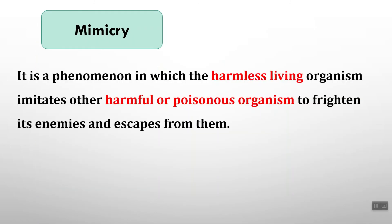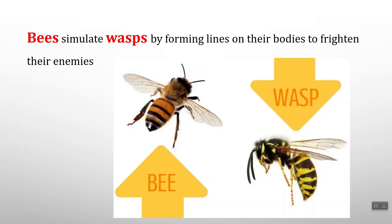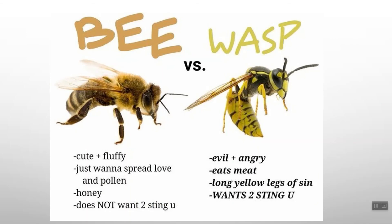The second way for animals to protect themselves is mimicry. Mimicry is the phenomenon in which a harmless living organism imitates another harmful or poisonous organism to frighten enemies and escape from them. For example, bees simulate wasps by forming stripes on their bodies to frighten enemies. The stripes on the bee's body frighten birds and other enemies, so they will not attack it — this is called mimicry.